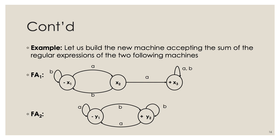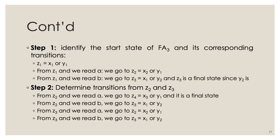The first step is to build Z1, which equals X1 (start state of FA1) or Y1 (start state of FA2). From Z1 reading 'a' we go to X2 or Y1, a new combination called Z2. From Z1 reading 'b' we go to X1 or Y2, a new combination called Z3. Z3 is final because Y2 is itself final.